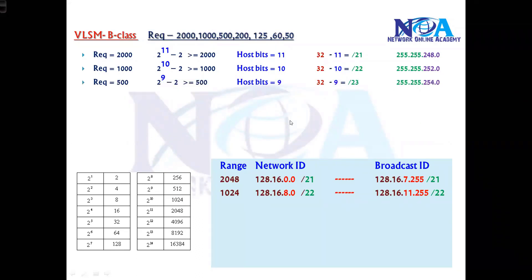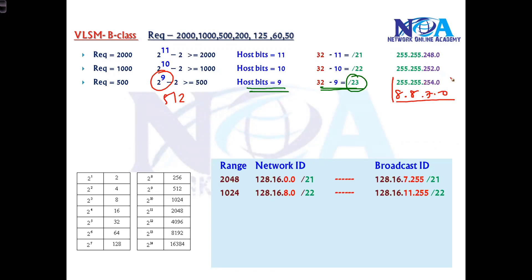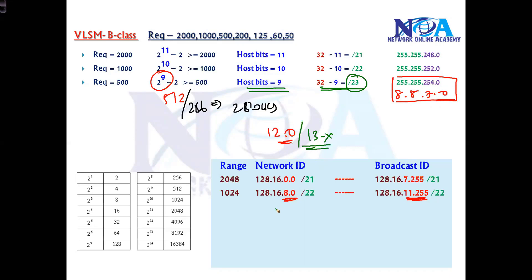The next requirement is 500, so the possible size is 2 to the power of 9, which is 512. The host bits are 9, and 32 minus 9 gives slash 23. The equivalent subnet mask is 255.255.254.0. We get two blocks of addresses, so the range starts from 12 — since the previous range ended at 11 — covering 12.0 to 13.255.